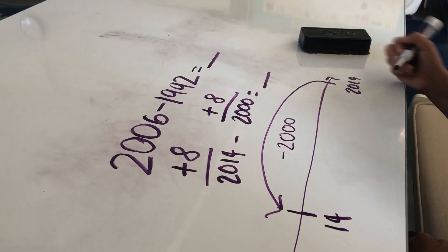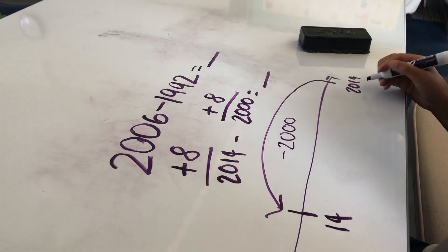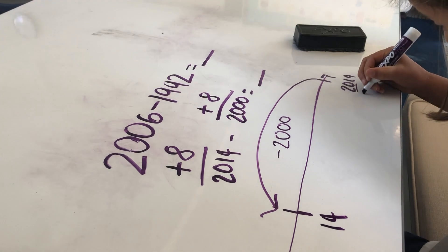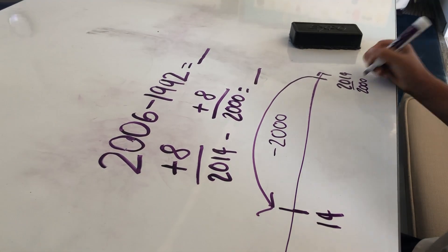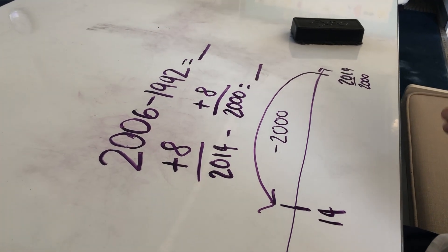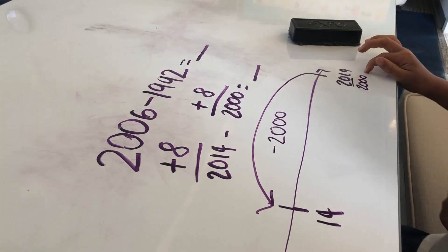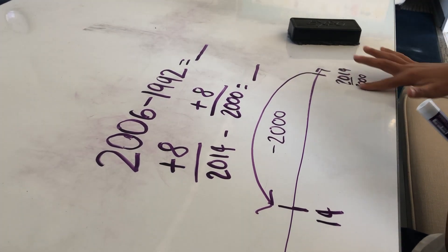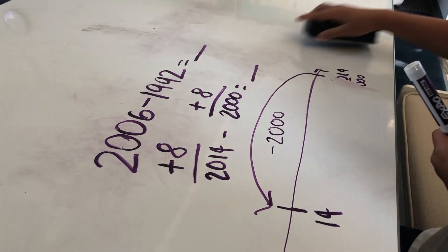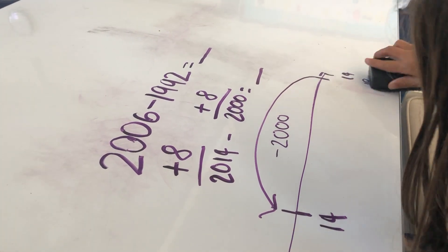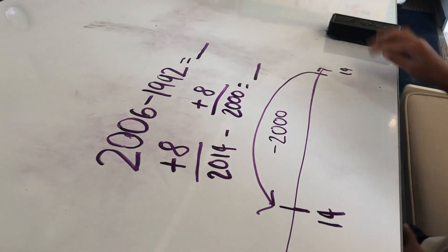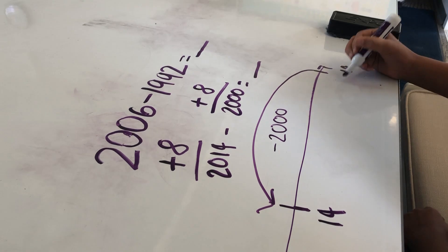Another way you could do it is since you know that this 20 right here represents 2000, you could just notice that if you take that 20 away, you would be left with 14.